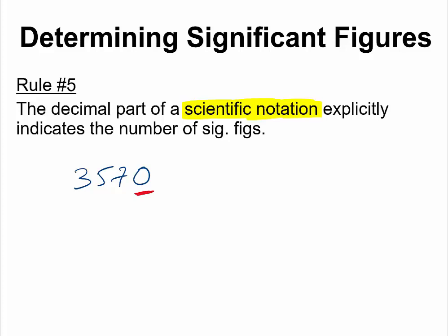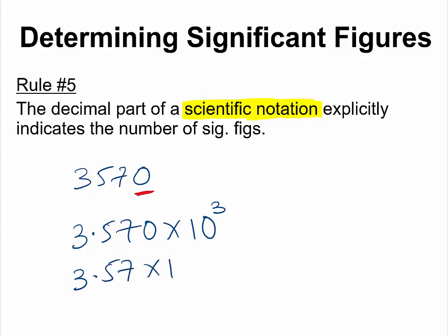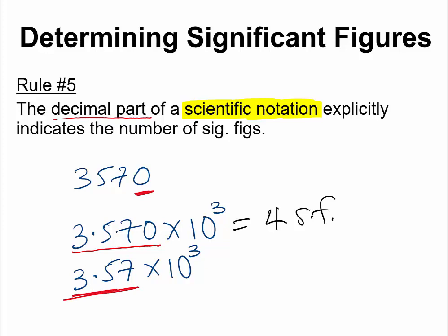What do I mean? Take a look at these two numbers: 3.570 × 10³ and 3.57 × 10³. To a mathematician they mean exactly the same thing, but they have two different significant figures. We only look at the decimal parts. So for 3.570 × 10³ we have four significant figures, while for 3.57 × 10³ we have three significant figures. When you write numbers like this, you leave no doubts as to how many significant figures you are trying to express.